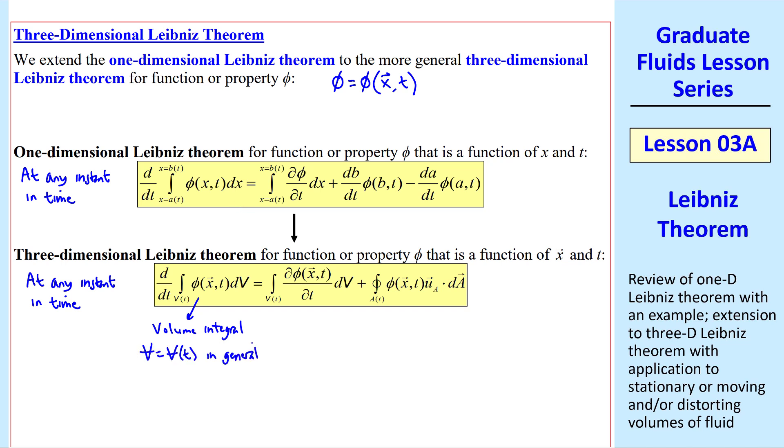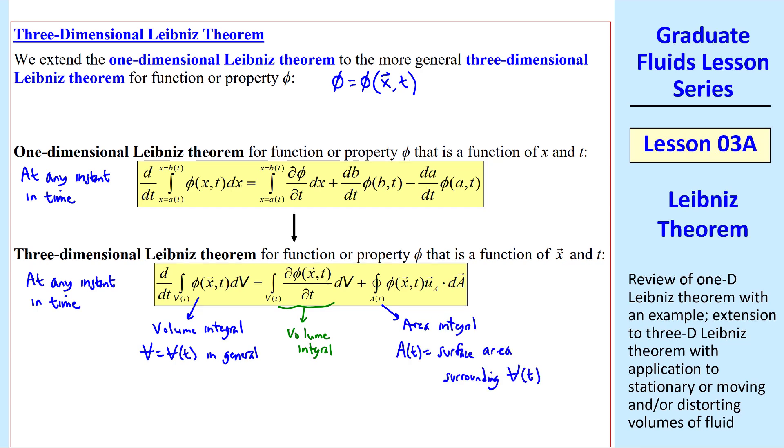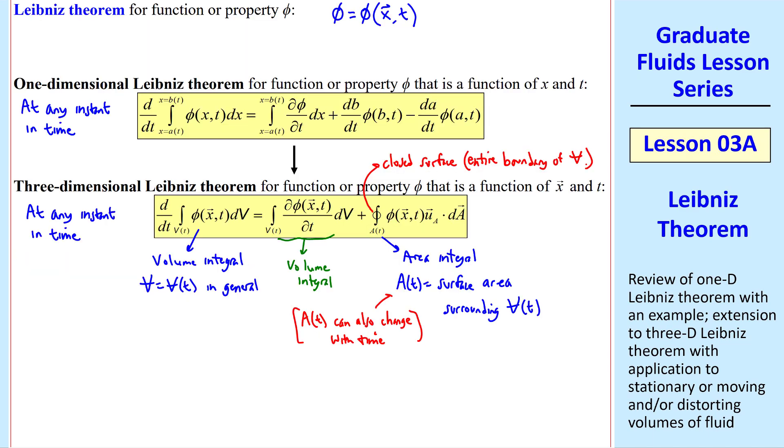And in general, v can change with time. I point out that in my lessons, I use a line through a v to indicate volume so as not to be confused with the magnitude of velocity, which is capital V, without the line through it. This term is also a volume integral. But this term is an area integral, where A(t) is the surface area surrounding volume v(t). A(t) can also change with time. Not all authors do this, but I like to put a circle around this area to indicate that it's a closed area, a closed surface. It's the entire boundary of volume v(t).